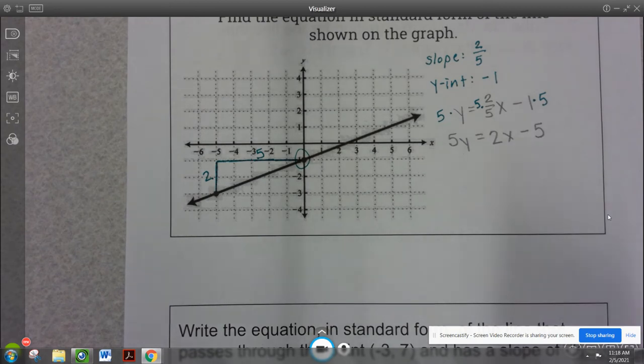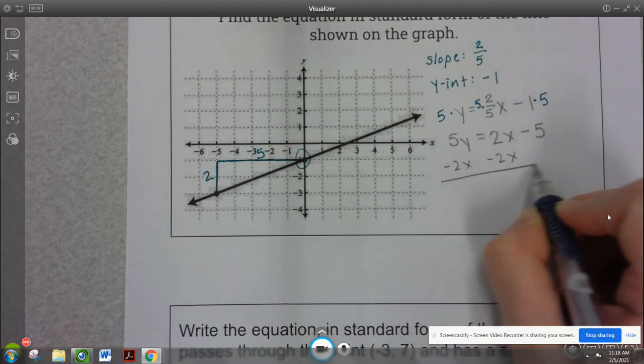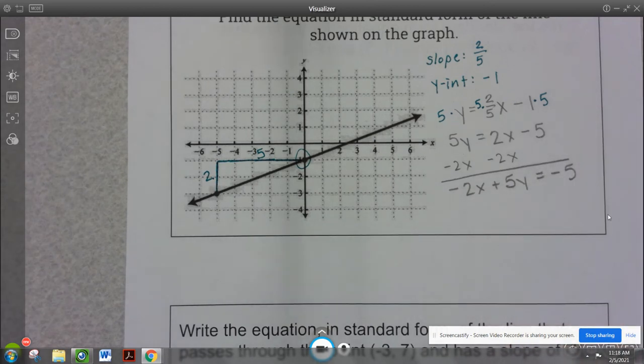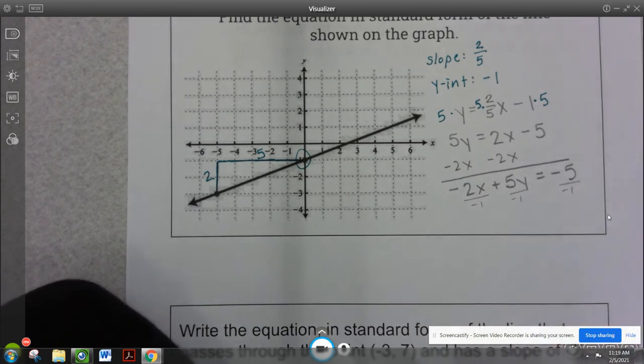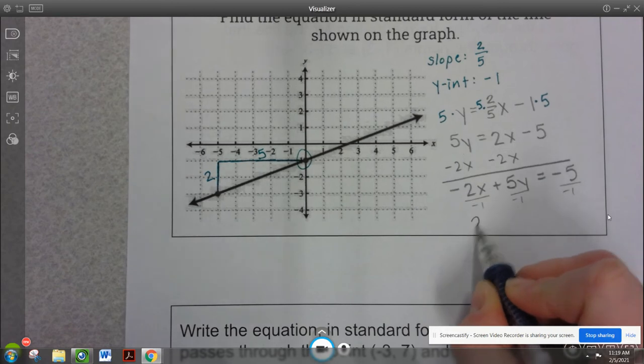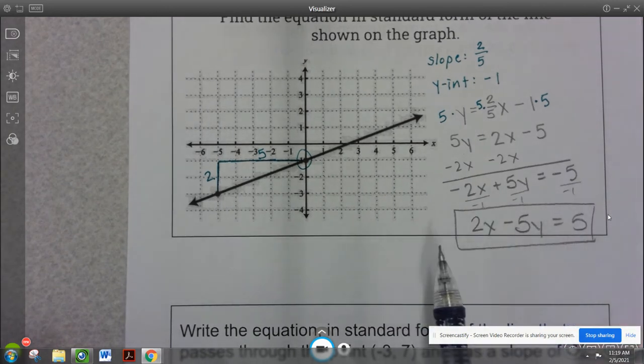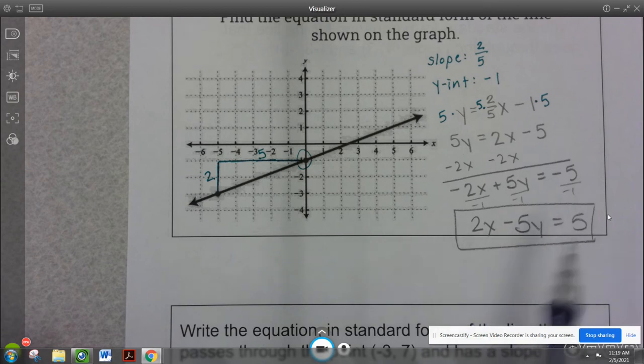So this is going to give me 5y equals 2x minus 5. Now x and y have to be together. So I'm going to subtract 2x from both sides. So I have negative 2x plus 5y equals negative 5. Now if this is a multiple choice question, 99.9% of the time, they are going to give you x first and x positive. I highly doubt that they're ever going to give you a question where x is negative because that's not standard form. So everybody has to flip, sign-wise. So my standard form would be 2x minus 5y equals positive 5. Now all of my values are integers. My greatest common factor between a, b, and c is 1. And the value in front of x, my x coefficient is positive.